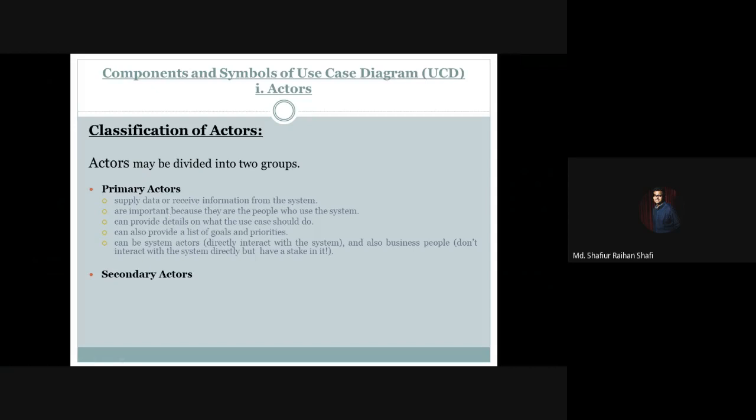Primary actors can provide details on what the use case should be. Since primary actors directly use the system and have direct interaction with it, they can provide details about what kind of functionality or services the system should have. In that sense, primary actors help us gather the functional requirements of the system, which ultimately helps in constructing the use case diagram.